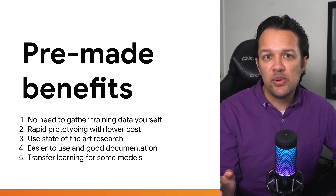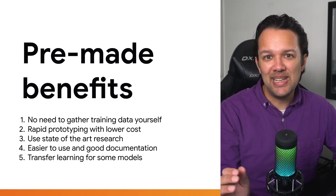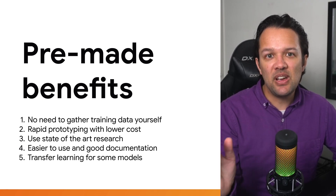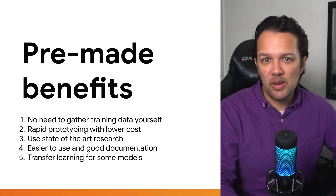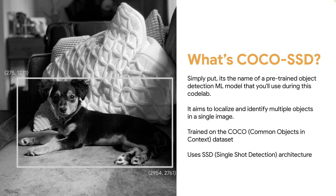Finally, some pre-trained models support transfer learning, which you will learn more about later in this course. Transfer learning is essentially the art of reusing a model with your own custom data so it can be repurposed for a new but similar task. Today, you'll be using the COCO SSD model. This model aims to localize and identify multiple objects in a single image. It's been trained on the COCO dataset — Common Objects in Context — created by Microsoft. The model uses the SSD architecture, which is where it gets its name: COCO SSD, referring to the dataset and the architecture it uses.